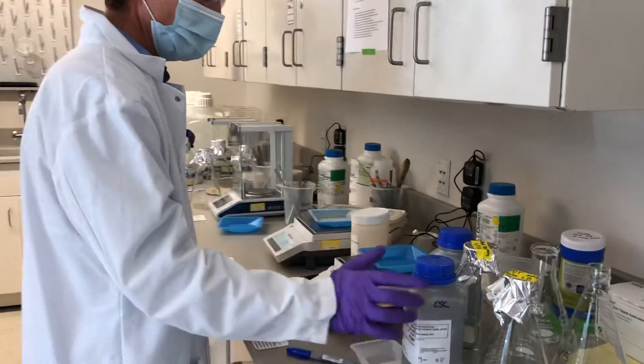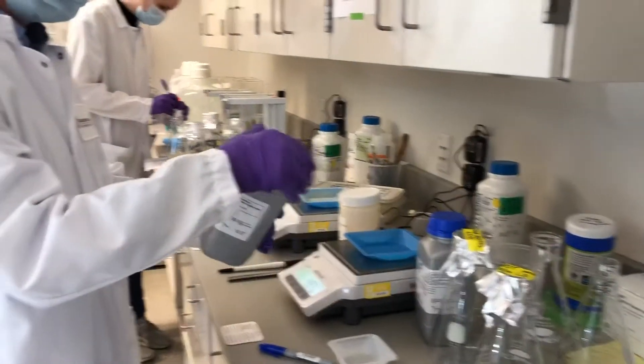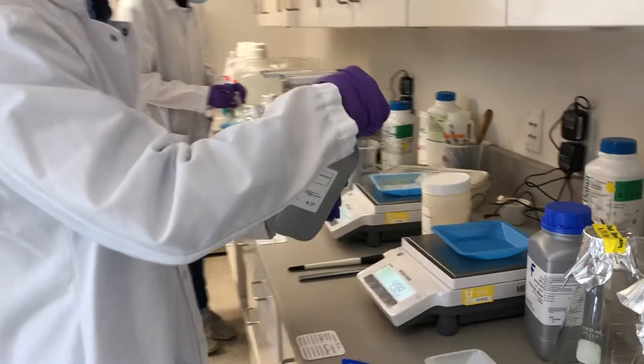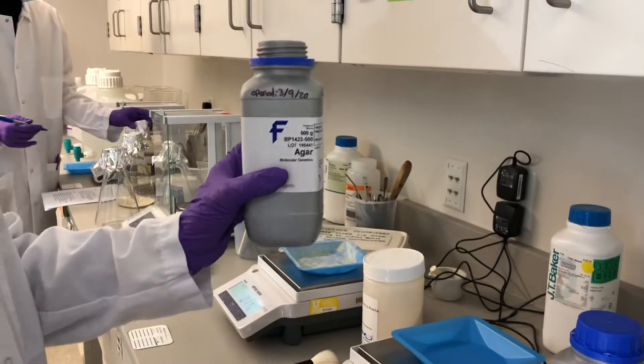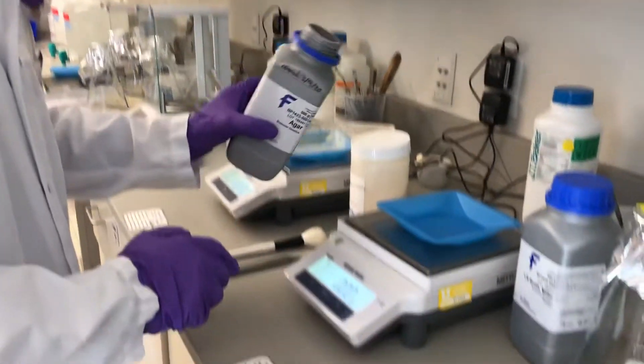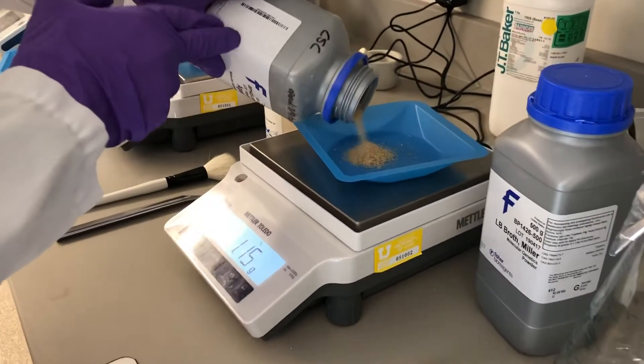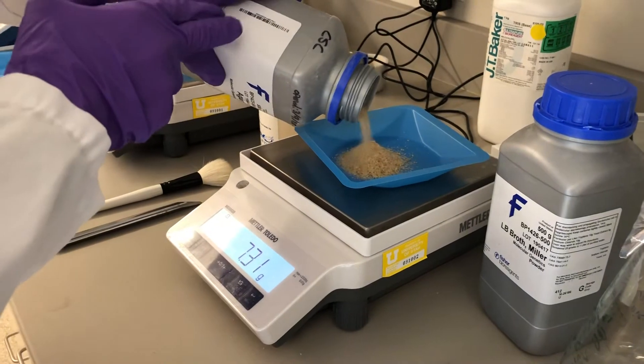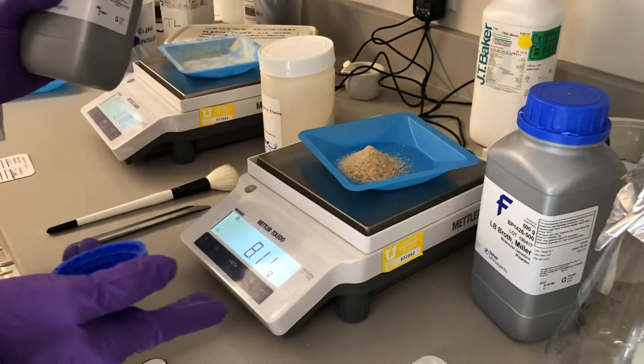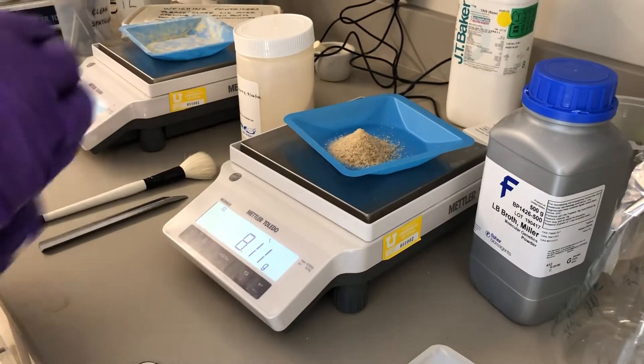The recipe is seven and a half grams of agar. So here's my dry agar. I will tare the balance and gently pour to avoid producing a lot of aerosols until I get to about seven, but eight—eight point one is okay.